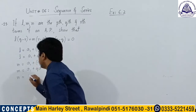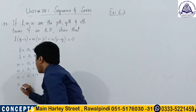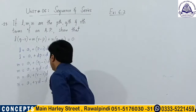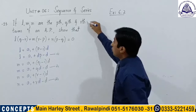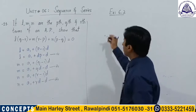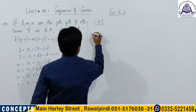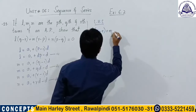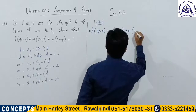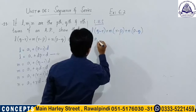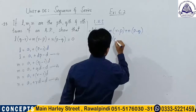And n = a1 + (r − 1)·d = a1 + rd − d (equation 3). Now replacing the values of l, m and n in the left-hand side: LHS = l·(q − r) + m·(r − p) + n·(p − q), where l = a1 + dp − d.